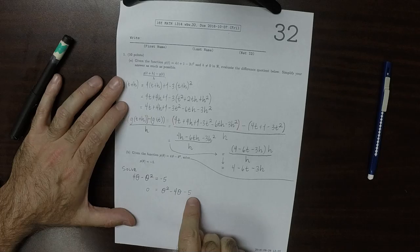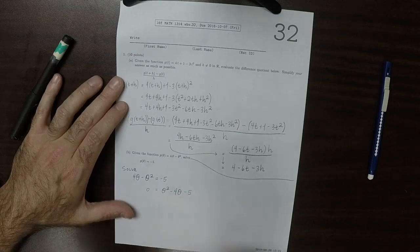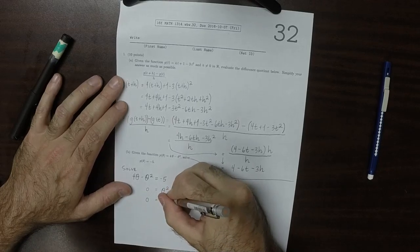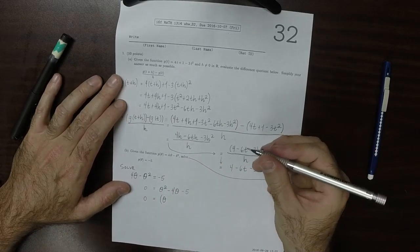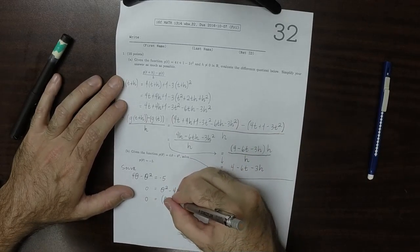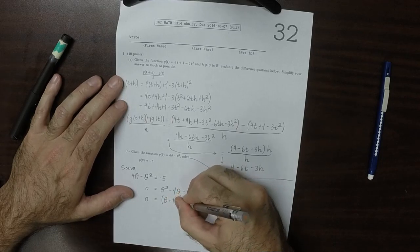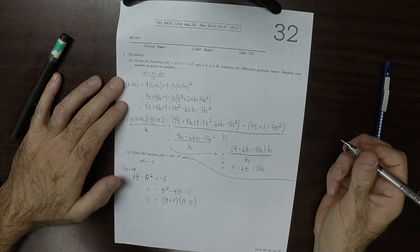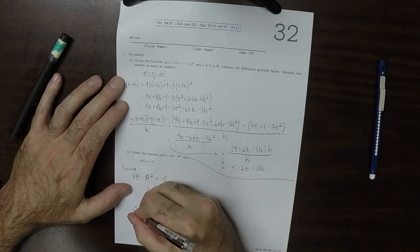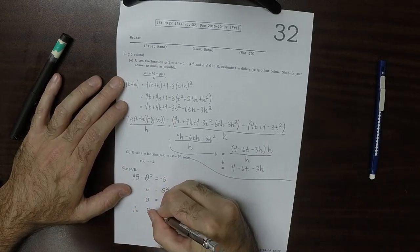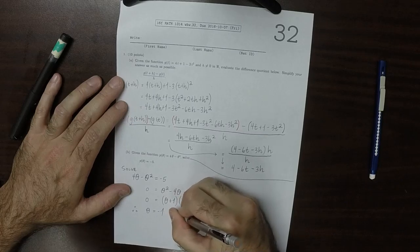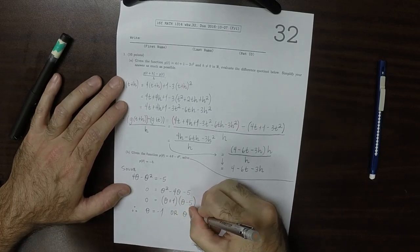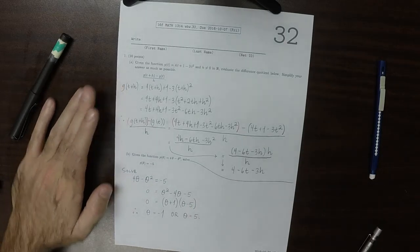And then can I think of two numbers whose product is -5, and whose sum is -4? Yes. So 0 = (θ + 1)(θ - 5). So there are two solutions. θ = -1, or θ = 5. And those are the answers.